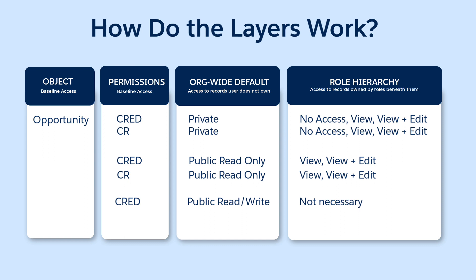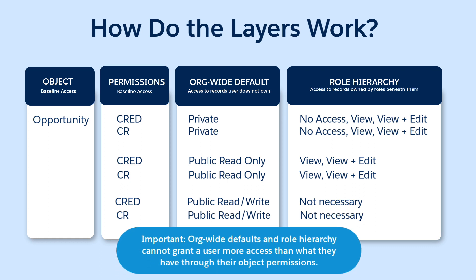If we change Alan's profile to grant full Create, Read, Edit, Delete object permissions, and the org-wide defaults are set to public read-write, then the role hierarchy here is not necessary. Alan already has access to all opportunities through his object permissions and the org-wide defaults. If we change Alan's object permissions to have only Create and Read access, and the org-wide defaults are set to public read-write, then he has access to all opportunities, but only the ability to read them, since the org-wide defaults and role hierarchy don't grant more permissions than the object permissions.